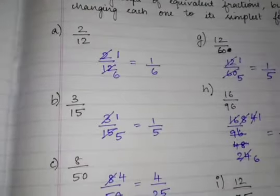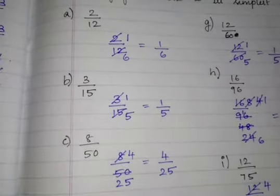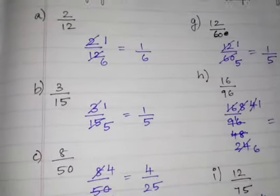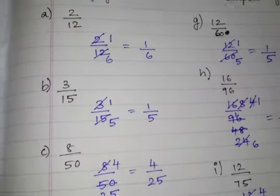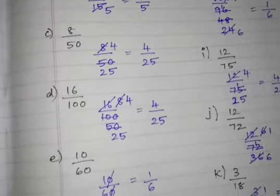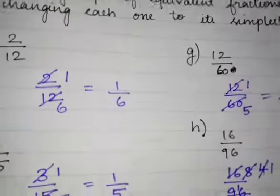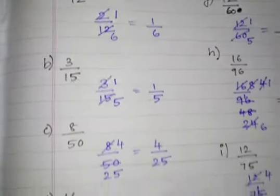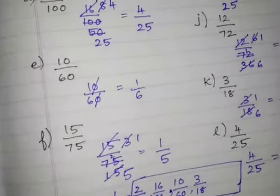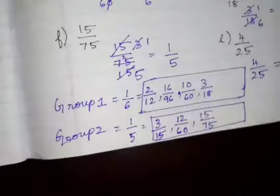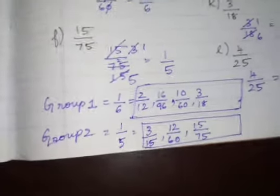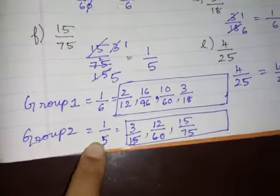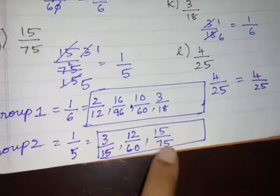Group number 2 has simplest form 1 by 5. What fractions give 1 by 5? We have 3 by 15, 12 by 60, and 15 by 75. These fractions, with simplest form 1 by 5, form group number 2.